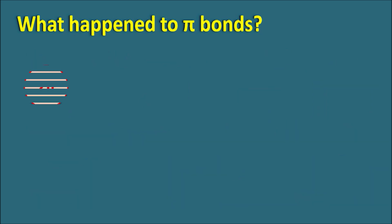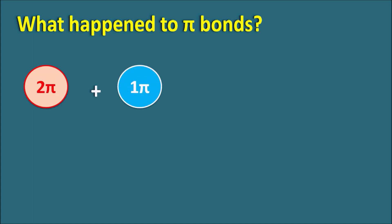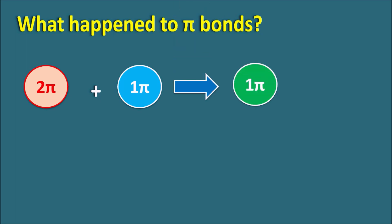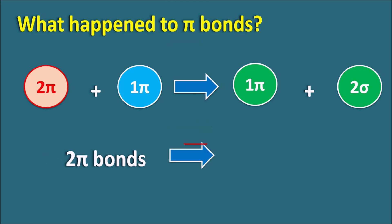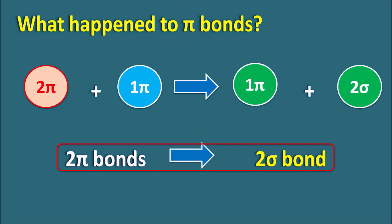Initially the diene has two pi bonds and the dienophile has one pi bond — three pi bonds total. In the product there is one pi bond and two newly formed sigma bonds. So three pi bonds are converted to one pi bond plus two sigma bonds. Simply put, two pi bonds are converted to two sigma bonds: one pi bond supplied by the dienophile and another by the diene, while one pi bond is just delocalized.